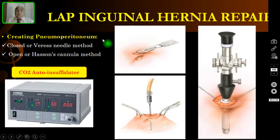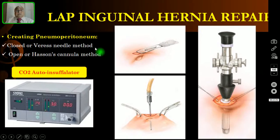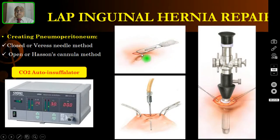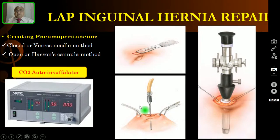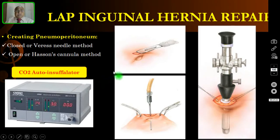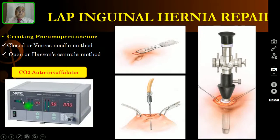You must create the pneumoperitoneum. For TAPP repair, you can use either the closed Veress needle method or the open Hassan cannula method. Make a small incision, insert the Veress needle, and insufflate until the pressure is below 15 mmHg. For TEP repair, you use only the Hassan cannula or blind method. The carbon dioxide auto-insufflator depicts the pressure, rate of flow, amount of gas utilized, and how much gas remains in the cylinder.